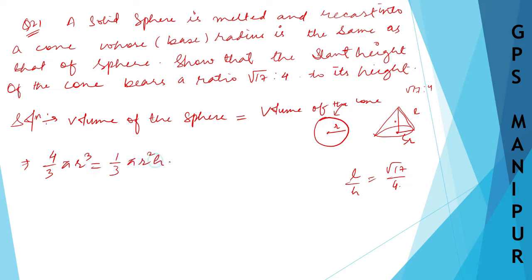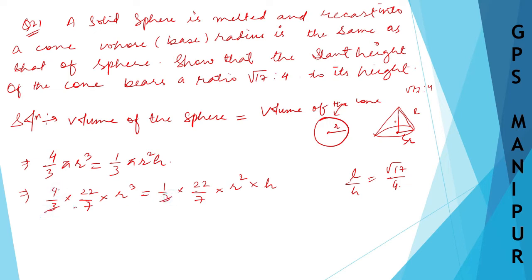Substituting: 4/3 π r³ equals 1/3 π r² h. We can cancel 1/3, π, and then r² from both sides. So r³ divided by r² gives r, leaving us with 4r = h. This is equation 1.